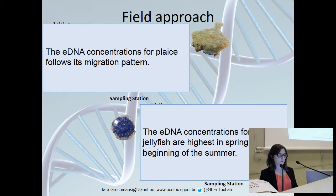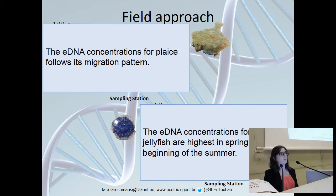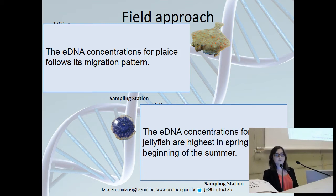We could look at these patterns with qPCR in the lab for species individually, but given that there are more than 2,000 species in our Belgian North Sea, this would be impossible. So it is better to study multiple species at once, like for example jellyfish.